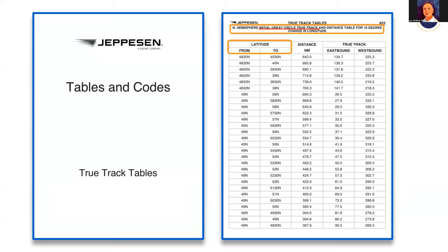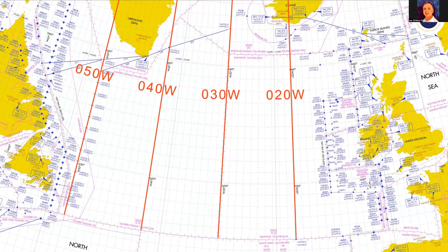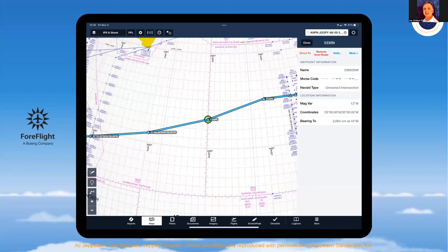The default for these tables is northern hemisphere, initial true track, and 10 degrees change in longitude. When we operate a jet aircraft across oceanic airspace, our waypoints are traditionally based on 10-degree longitude separations — in the North Atlantic: 050W, 040W, 030W, 020W. Many Pacific routes are based on the same 10-degree separation, though there are exceptions. The simplest way to get mag variation is to go into ForeFlight, select a waypoint, and ForeFlight will identify the mag variation based on its current tables.